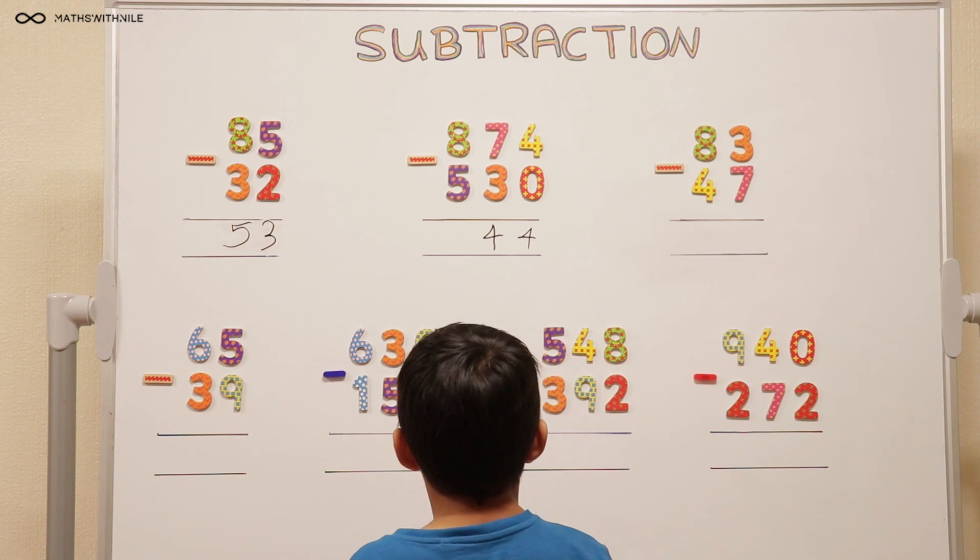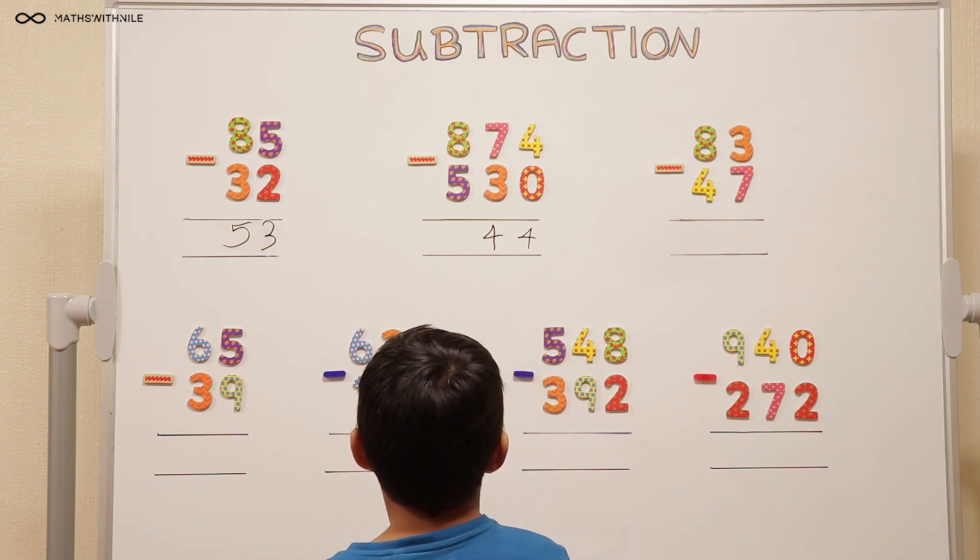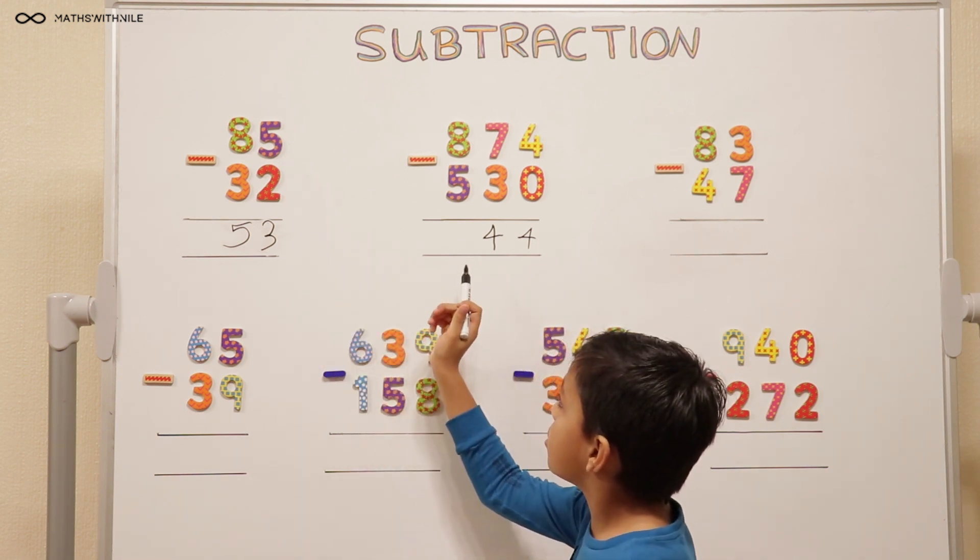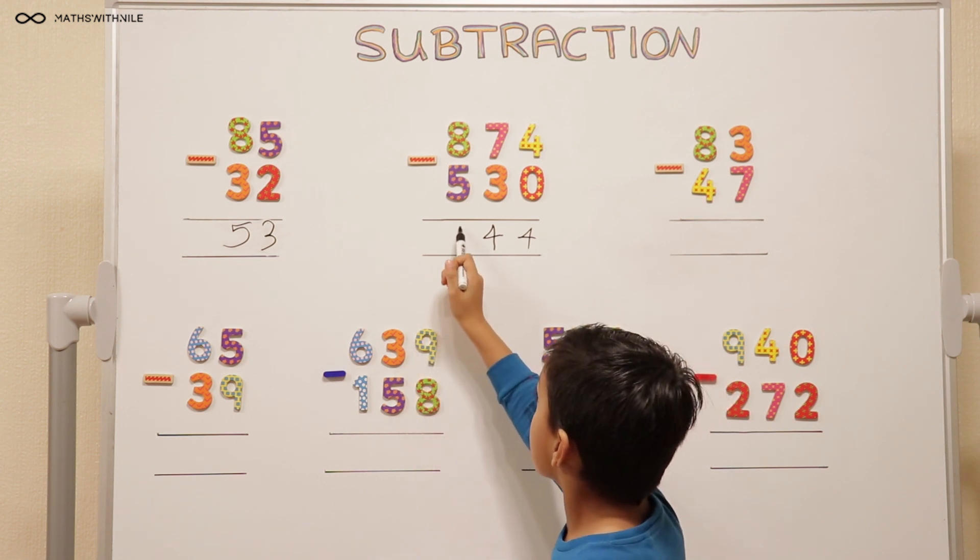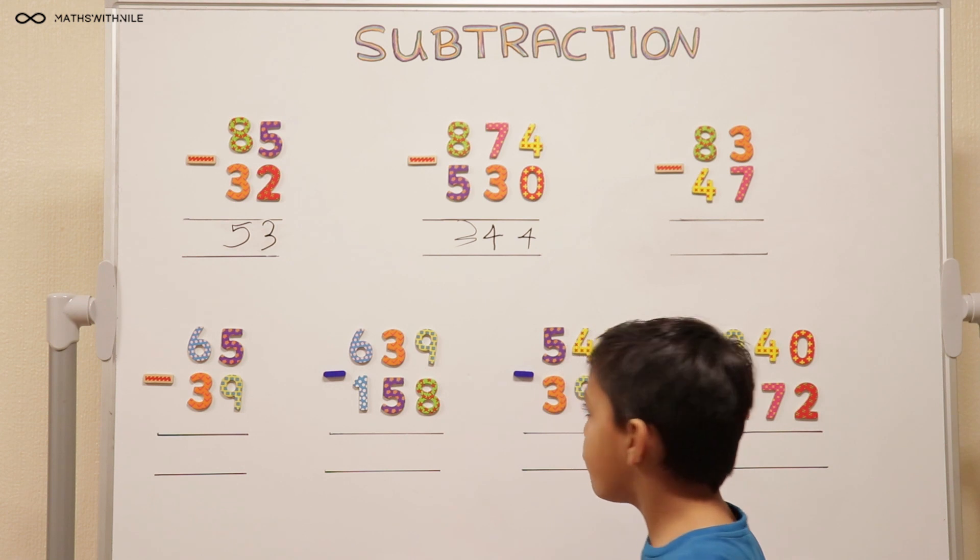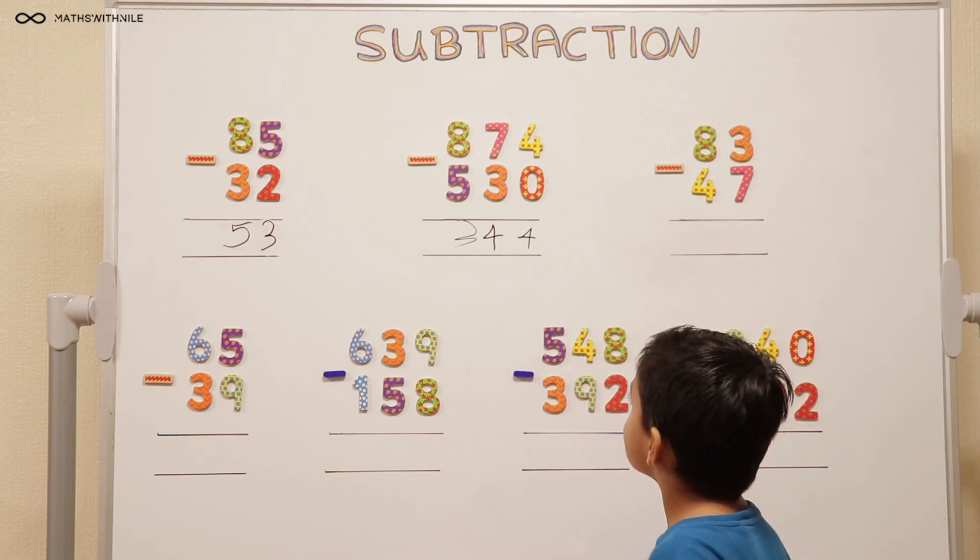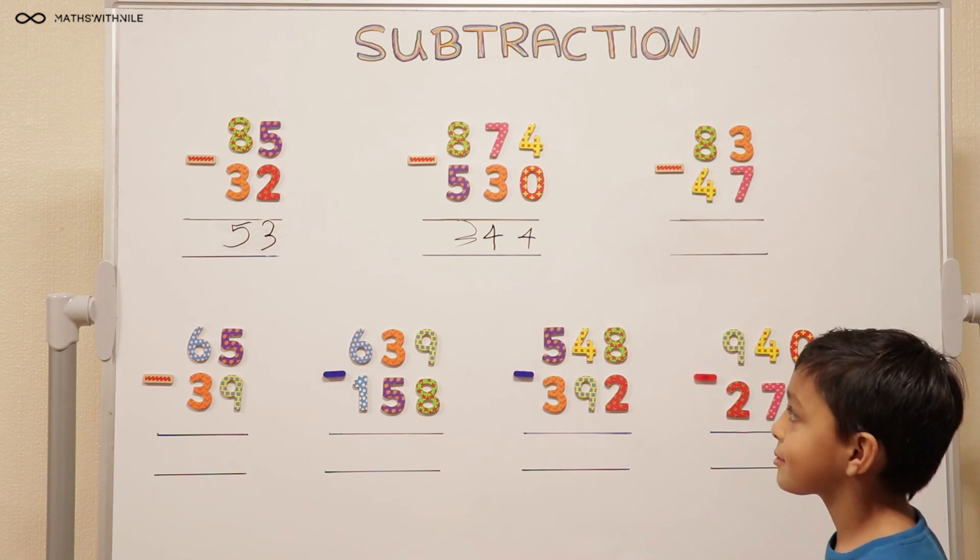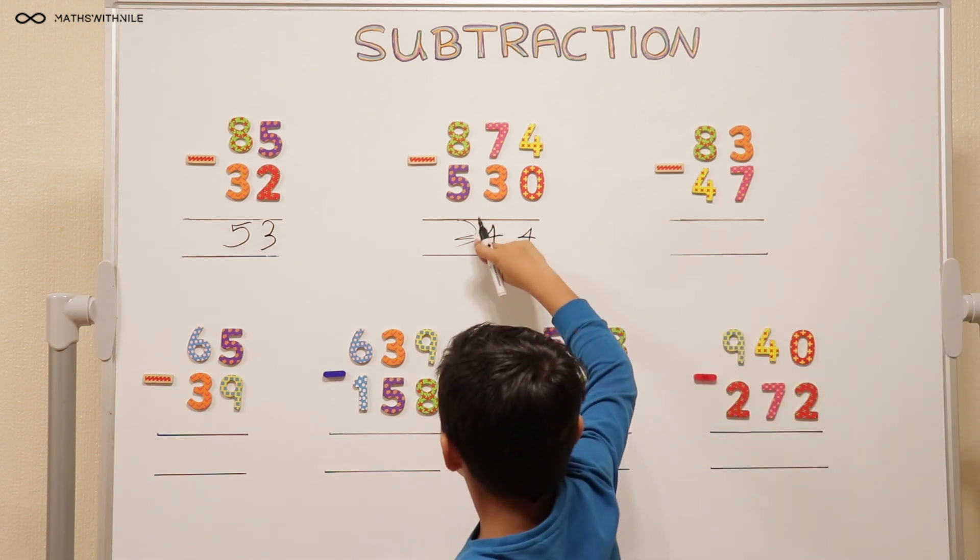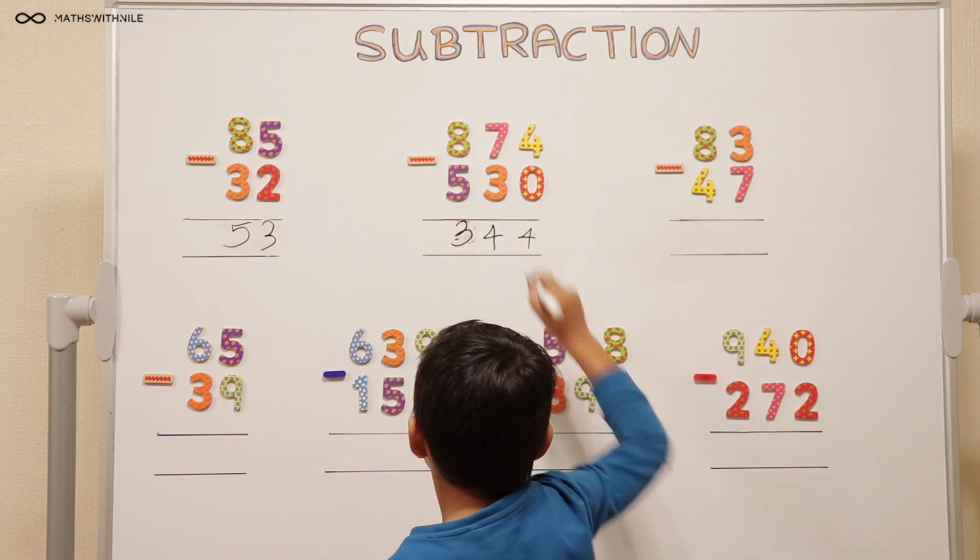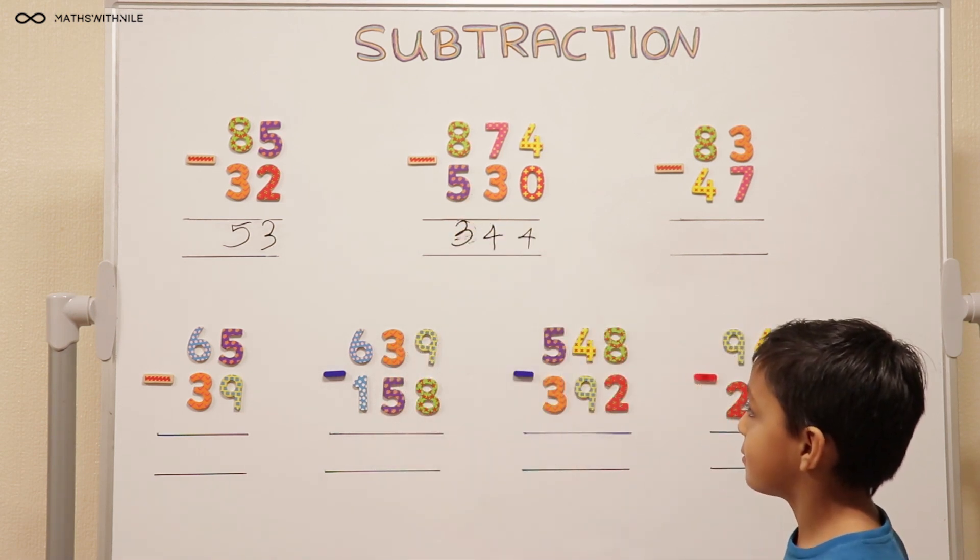44 so far. And 8 take away 5 equals 3. Very good. So what's the answer? 344. Let's move on to the next question. But let's be careful how we're writing those numbers. Because that 3 looks a bit wonky. That's a good 3.